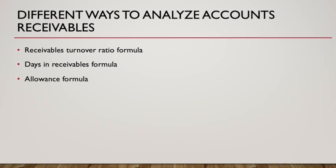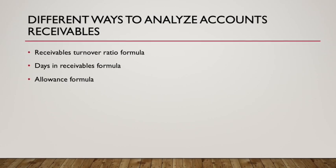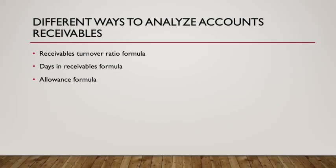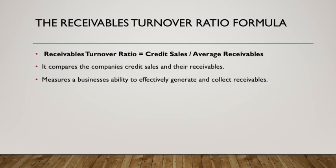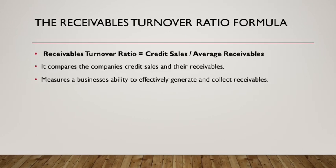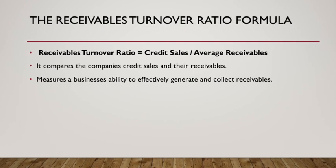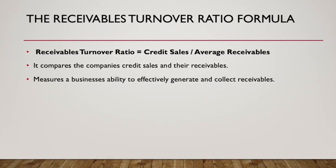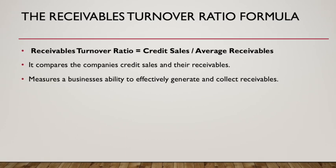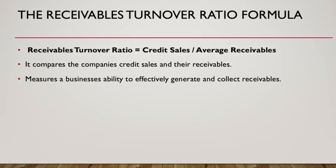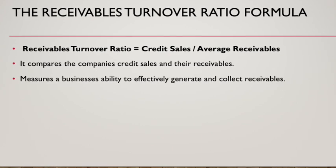The three different ways in which businesses analyse their accounts receivable include the receivables turnover ratio formula, the days in receivables formula, and the allowance formula. The receivables turnover ratio formula is calculated by dividing the credit sales by the average receivables. This formula is useful as it compares the company's credit sales and their receivables, measuring a business's ability to effectively generate and collect receivables.